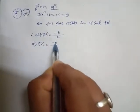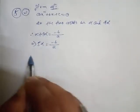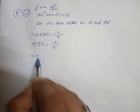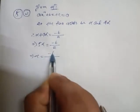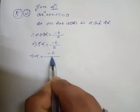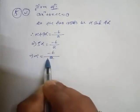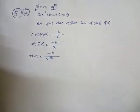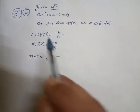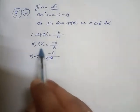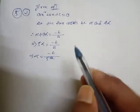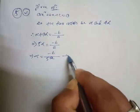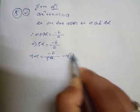So five alpha equals minus b by a, which gives alpha equals minus b by 5a. This is equation number one, from the sum of the roots.